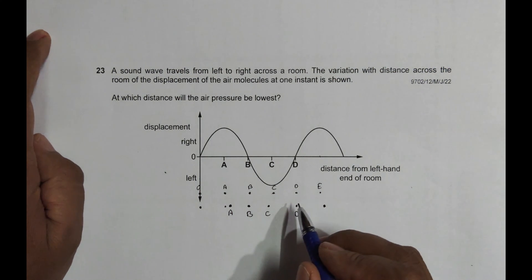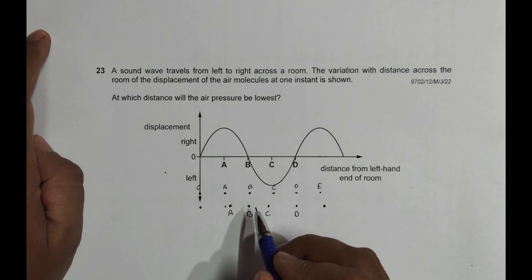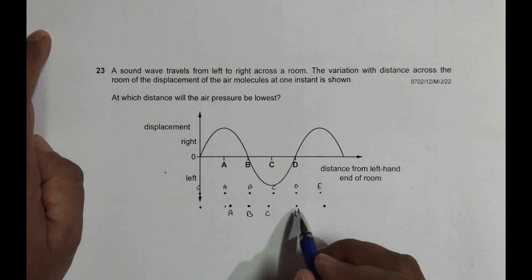Right now their positions are like this, so that means B is most compressed, this B is the most compressed region, and D is the most relaxed region. Relaxed means rarefaction, so it is at the center of the rarefaction.